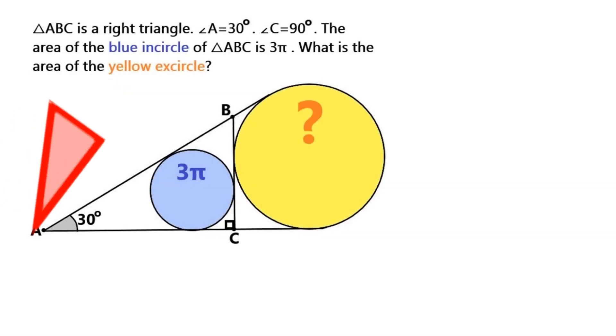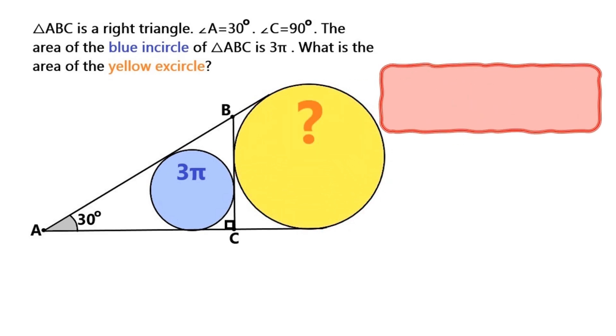In this super cool geometry question, we've got this right triangle ABC where angle A is 30 degrees. This inscribed blue circle's area is 3π, and we've also got this yellow excircle and we need to find its area. So if you want to try this on your own, now is the time to pause the video because I'm starting to solve it right now.